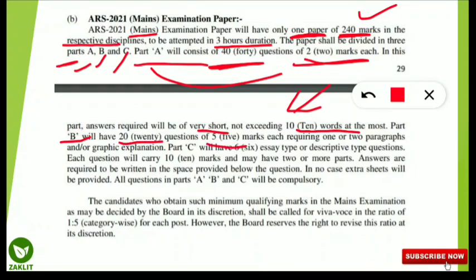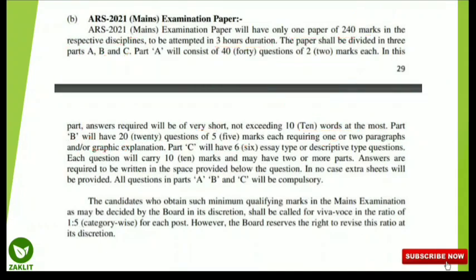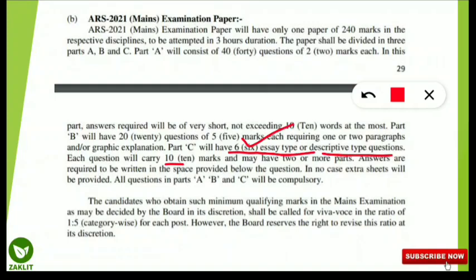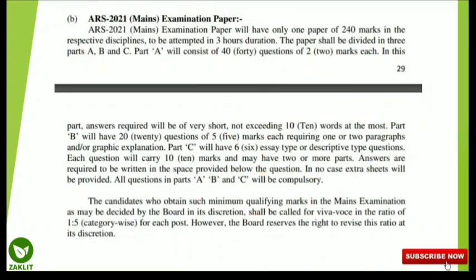Part B will have 20 questions of five marks each, requiring one or two paragraphs or graphical explanation. Part C will have six essay-type or descriptive-type questions, each carrying 10 marks — that means six essay questions totalling 60 marks — and may have two or more parts. Answers are required to be written in the space provided below each question, as the question paper and answer paper are combined. No extra sheets will be provided.